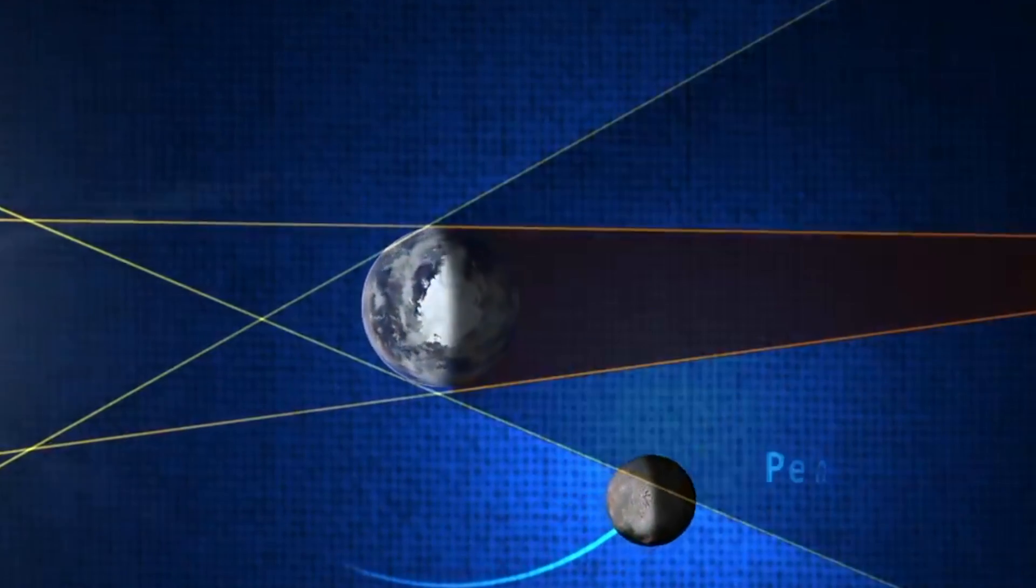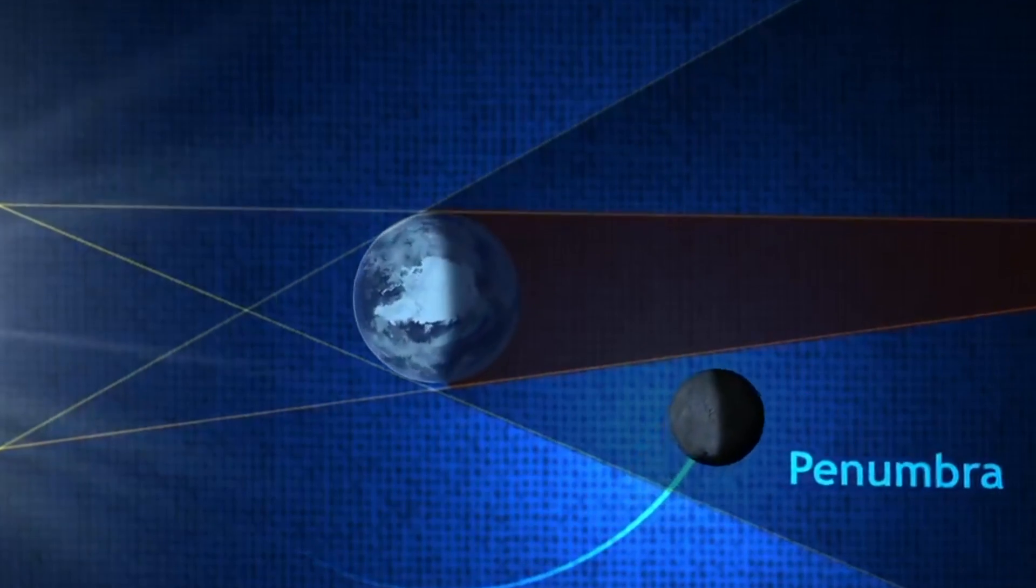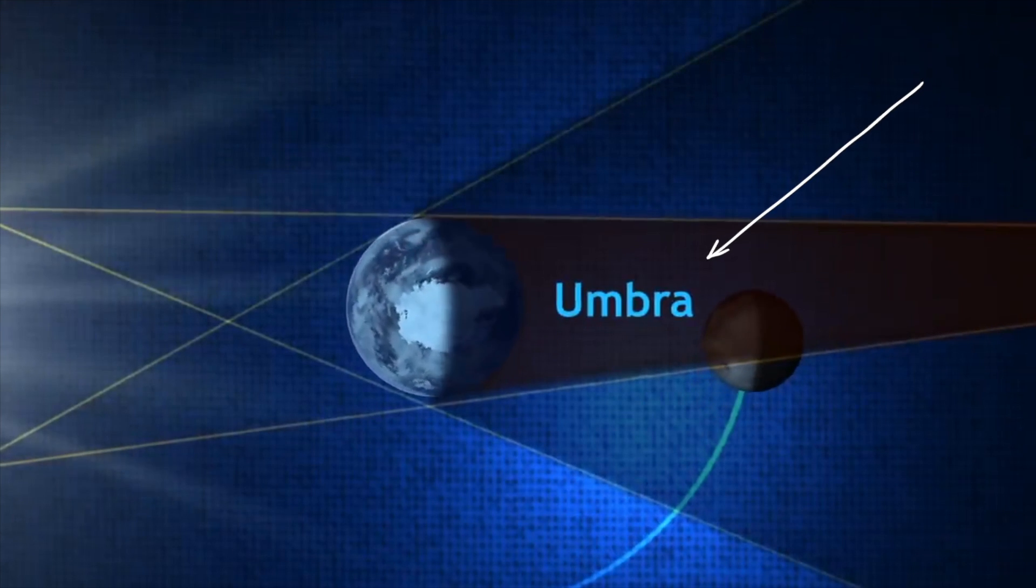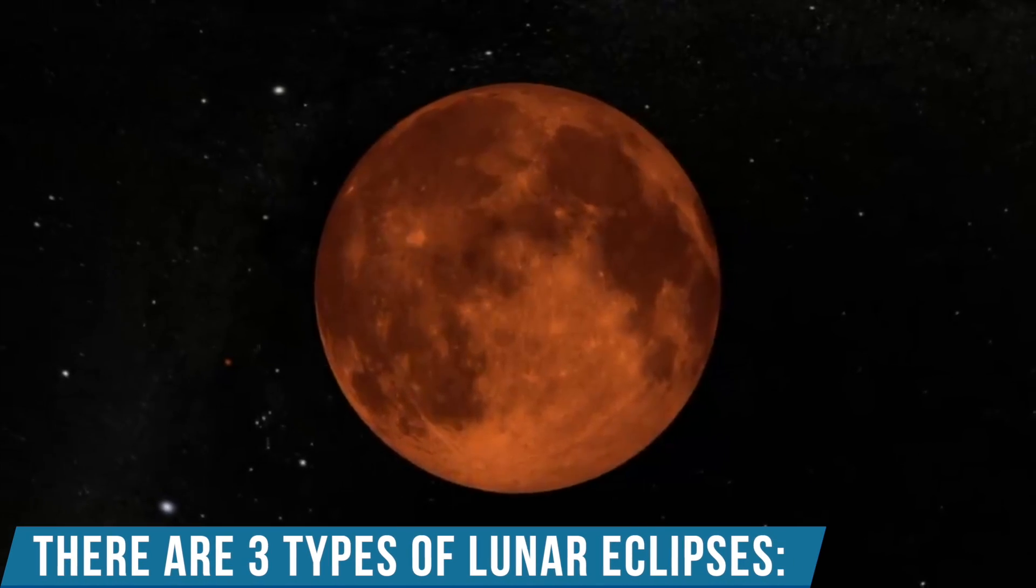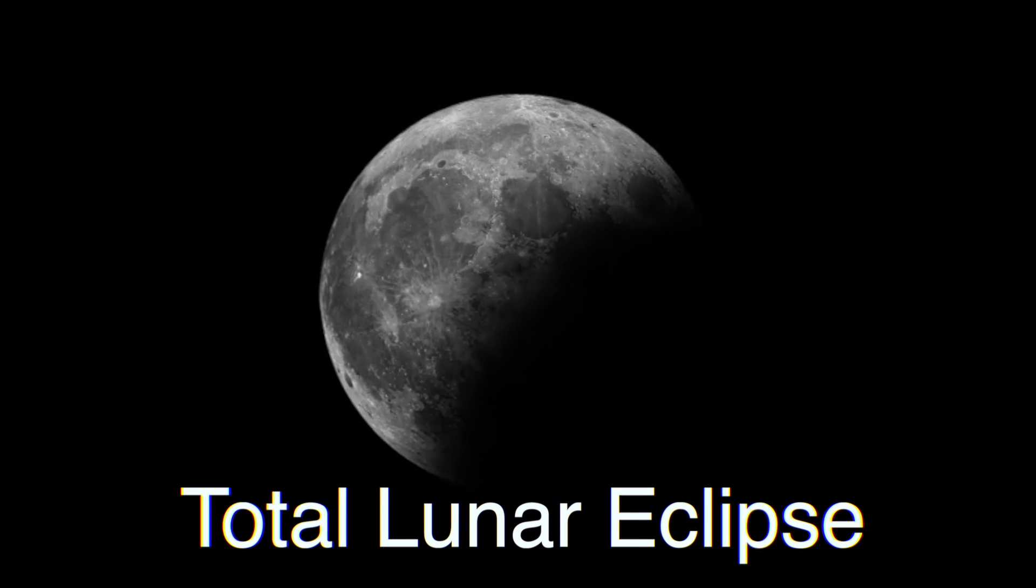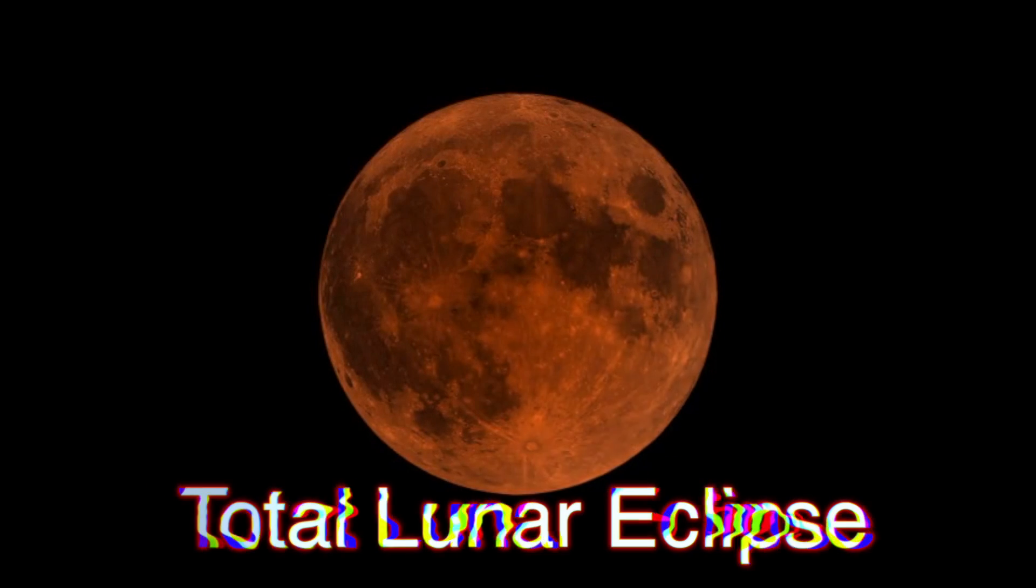However, when the Earth does eclipse the moon, it generally casts two types of shadows: a wider shadow known as the penumbra and a smaller, darker shadow known as the umbra. Typically, there are three types of lunar eclipses. The most breathtaking is a total lunar eclipse, which is going to take place this year on May 15th.